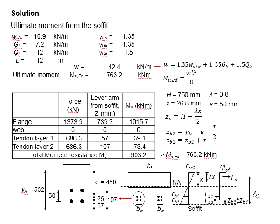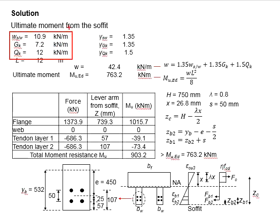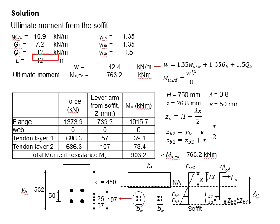Next we need to determine the ultimate moment from the soffit. This is the step where we check if the moment resistance of the section is greater than the loading acting on it. Before that, we need to calculate the ultimate moment acting on the member. The UDL values are obtained from the previous example: the self-weight is 10.9 kN/m, gk is 7.2 kN/m, and qk is 12 kN/m. This section has an effective span of 12 meters.